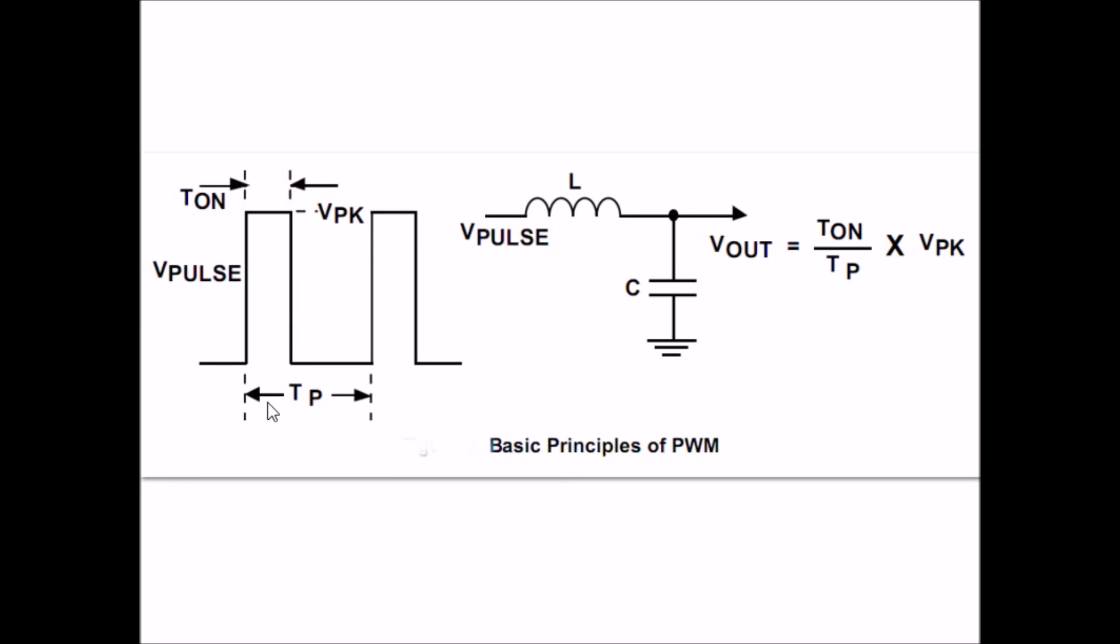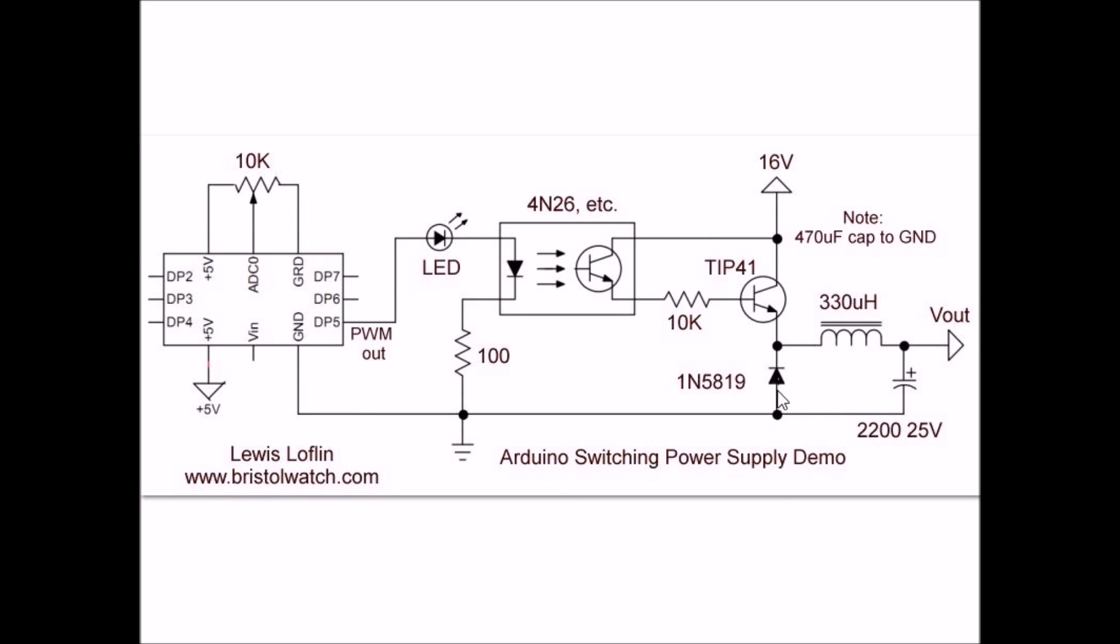This illustrates again how this works. That's period, basically on time, divided by the period, times the voltage peak, gives you your output voltage. In this case, I was using the pulse width modulation output on an Arduino, and I used a control connected to ADC zero in order to control the duty cycle. This is the complete circuit minus a capacitor that should have been here that I didn't draw in. Here is my potentiometer that controls my duty cycle. Here's my pulse width modulation out. I use an optocoupler to switch on and off a TIP-41 NPN transistor, which pumps my energy into my diode inductor capacitor circuit, and that's all there is to it.